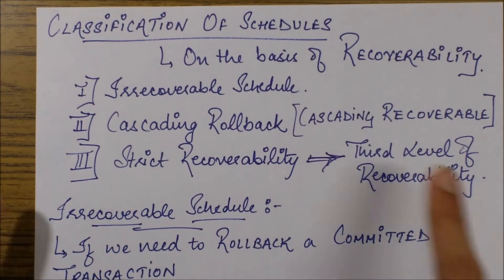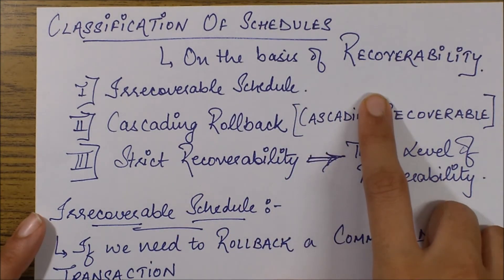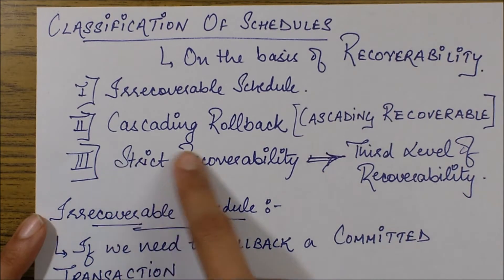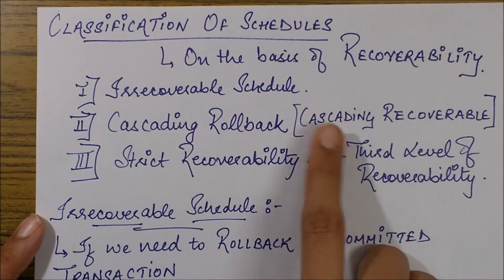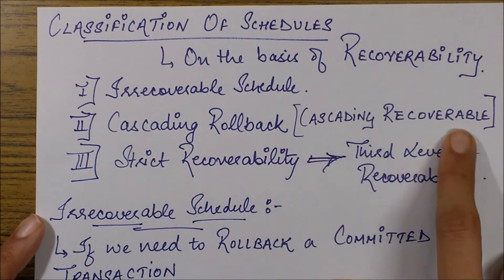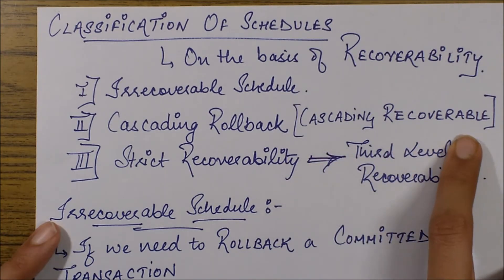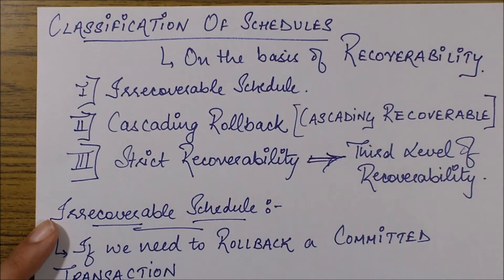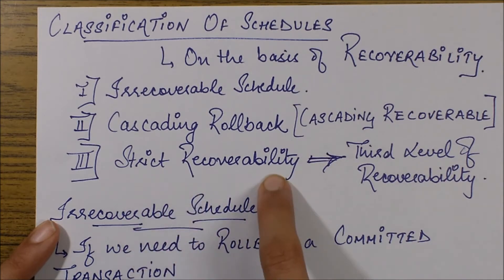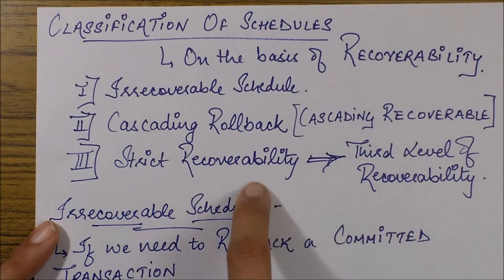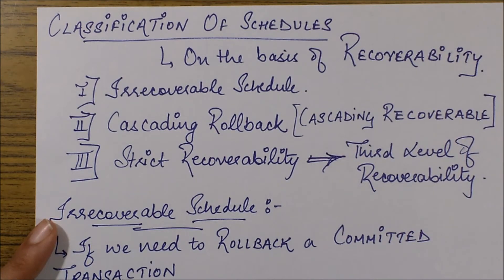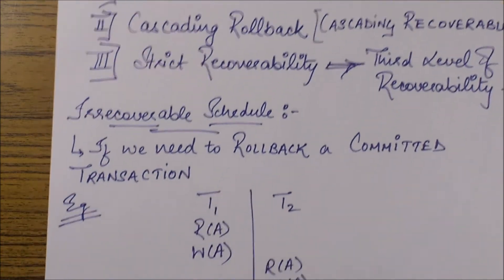The three types are: first, irrecoverable schedule, which we discussed broadly in the previous session; second, cascading rollback — the problem occurs in this schedule, and when we remove it, it becomes a cascading recoverable schedule, though you might find it named 'cascading rollback schedule' in some textbooks; and third, strict recoverable schedule, which is the highest level of recoverability.